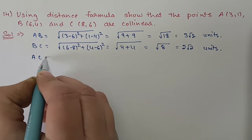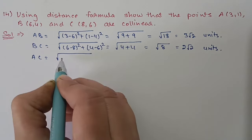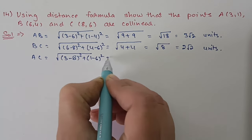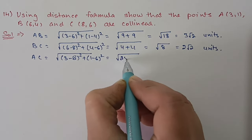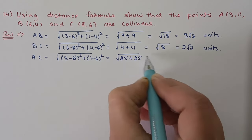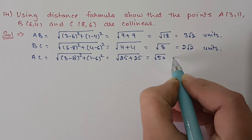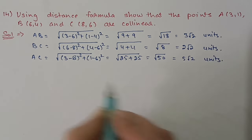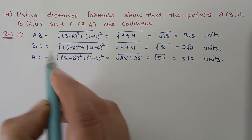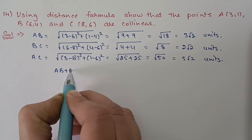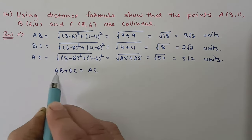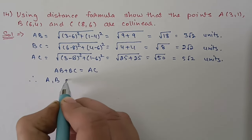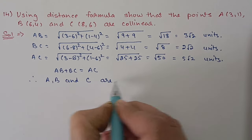Now third, AC = √((3−8)² + (1−6)²) = √(25+25) = √50 = 5√2 units. We can see that AB + BC = 3√2 + 2√2 = 5√2 = AC. Since AB + BC = AC, the three points lie on a single line; therefore A, B and C are collinear points.